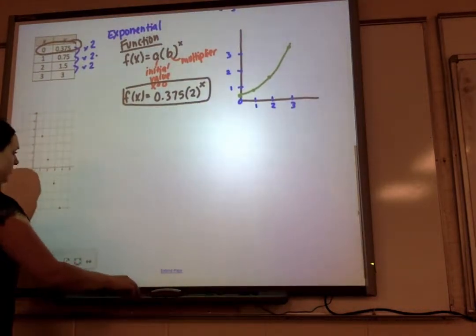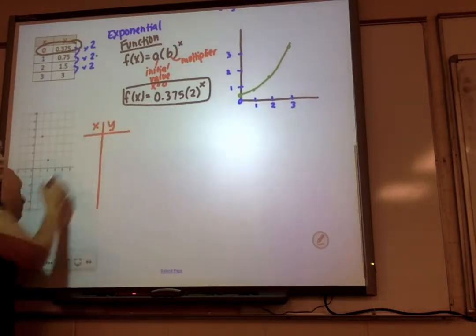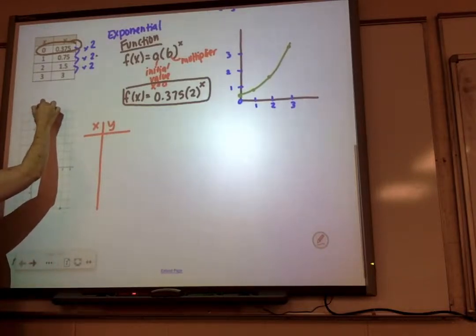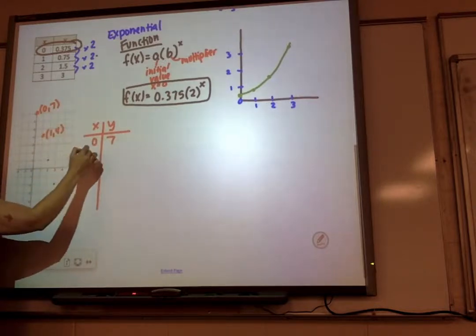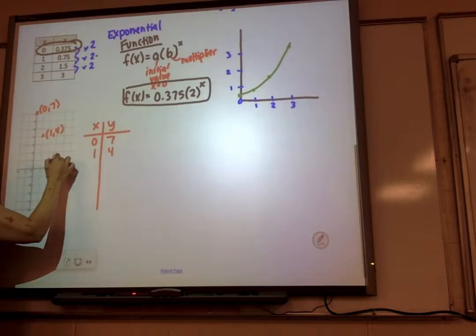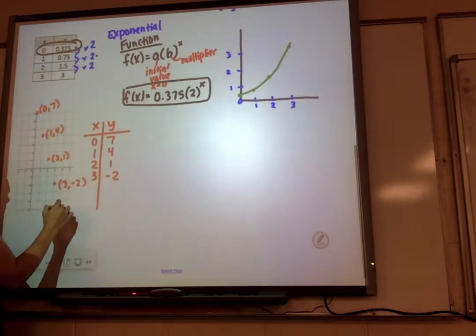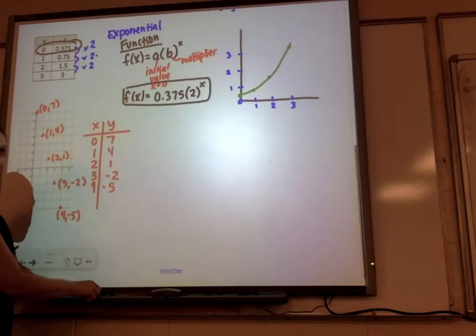Alright, next one we have a graph. So we're going to start with our table and use these points that we have. So the first point I have on my graph is 0, 7. That goes on my table. The second point I have on my graph is 1, 4. 2, 1. 3, negative 2. And 4, negative 5. So there's my table.